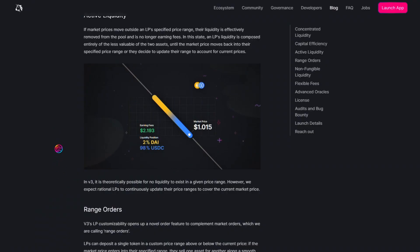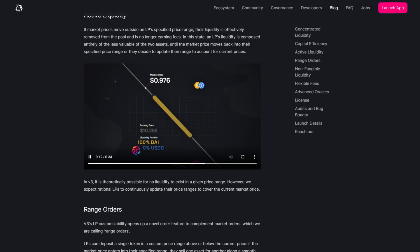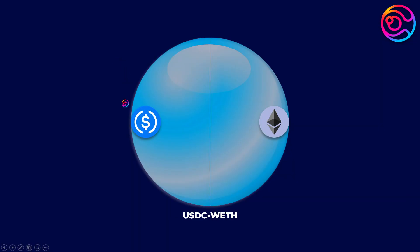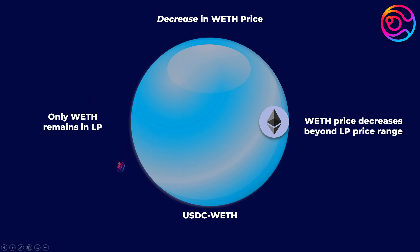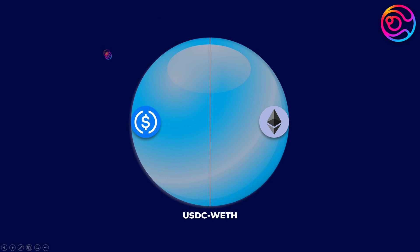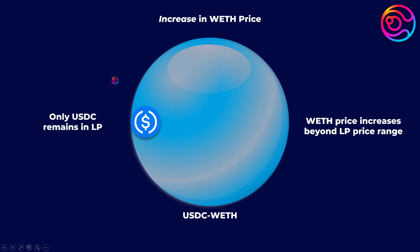Additionally, as mentioned in my Uniswap v3 impermanent loss video, once the price moves outside of your LP's price range, your LP shifts entirely to one asset. If the price of WETH drops below the minimum price of your LP, your LP will contain only WETH. If the price of WETH goes above the maximum price of your LP, your LP will contain only USDC.